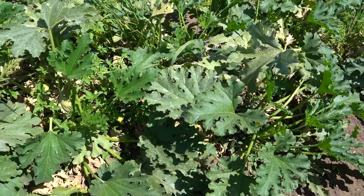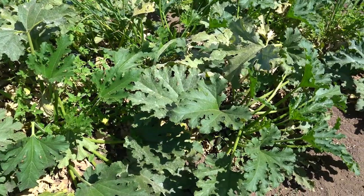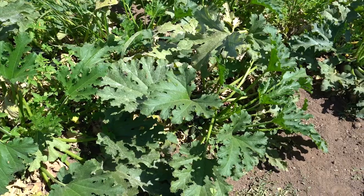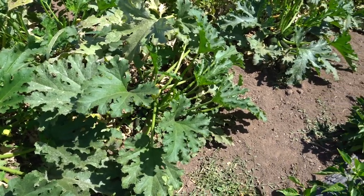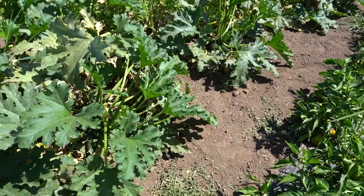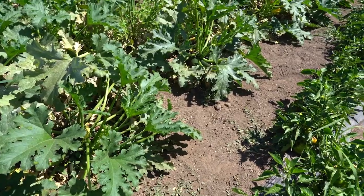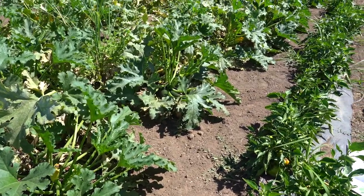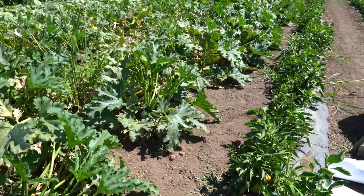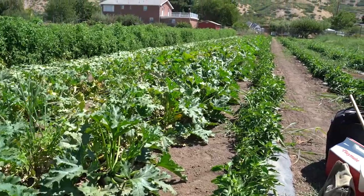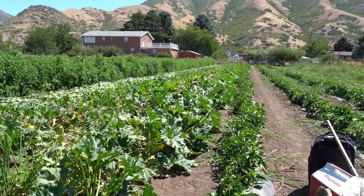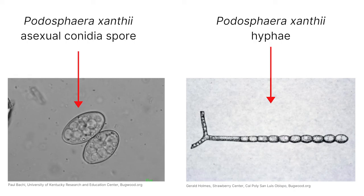Infected tissues form more spores that can be blown by wind to infect plants in new locations. The cycle of spore production, dissemination, and infection occurs continually all summer long. When temperatures cool in the late summer, the fungus switches from producing the conidia to producing the fruiting structures that contain the spores for winter survival.